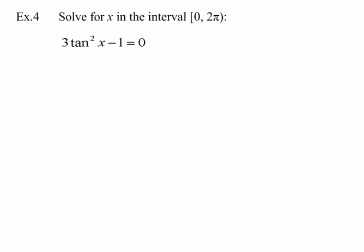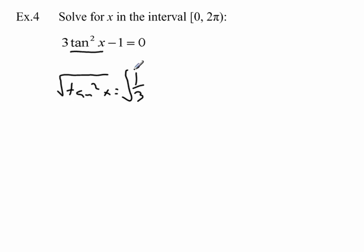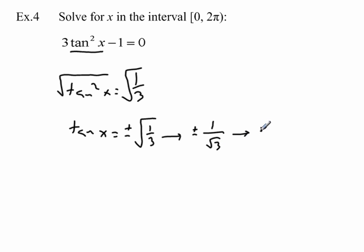Same direction: solve for x in the interval. We want to isolate the trig expression, so add 1 then divide by 3, giving us tangent²(x) = 1/3. We still don't have tangent by itself, so take the square root of both sides. Whenever we take a square root, we must include plus or minus — so tangent(x) = ±√(1/3), which can be written as ±√3/3. We're looking for an angle whose tangent equals 1/√3 or √3/3.